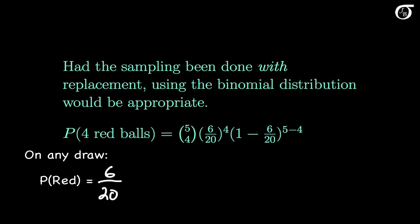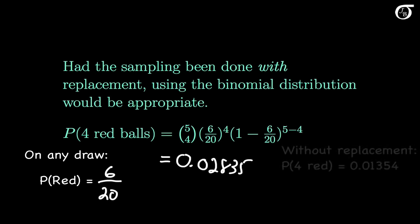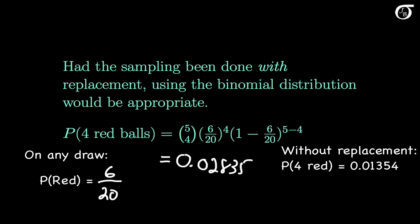I'm not going to go into the details, but this would be the appropriate method of calculating the probability using the binomial formula — you can see my video on the binomial distribution for more information. This works out to 0.02835 to 5 decimal places. Compare that to the probability we found previously using the hypergeometric distribution when the sampling was done without replacement, which was 0.01354. The probability found from the binomial distribution with replacement is actually quite a bit different, so if we were to mistakenly use the binomial distribution in the without-replacement case, our calculated probability would be quite a bit off.